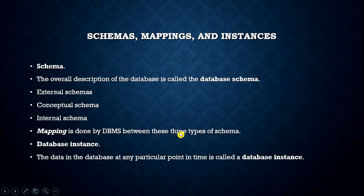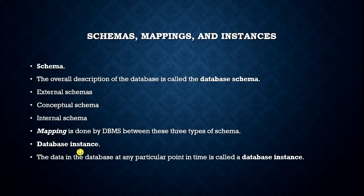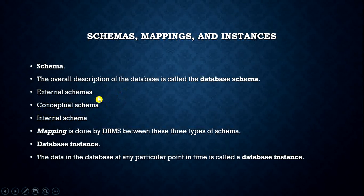Mapping between the three types of schemas is done by the DBMS. The external schema is derived from the conceptual schema — any data present in a view at the external level must be derived from the conceptual level. This is called external mapping. When mapping data from the logical structure to the actual physical record, this is called internal mapping, which is done between the conceptual schema and the internal schema.